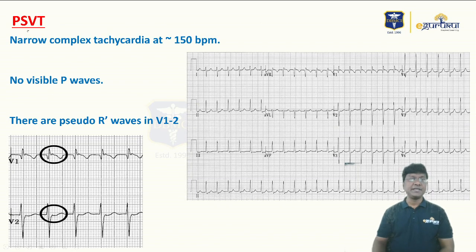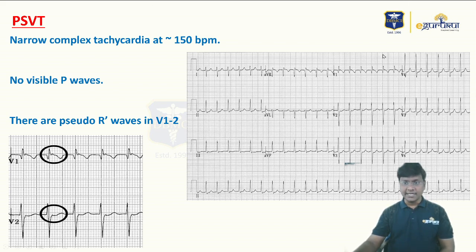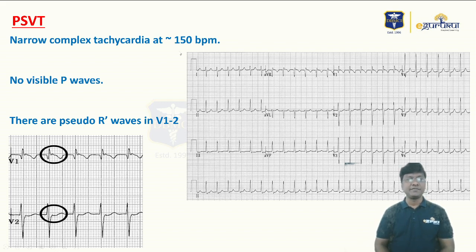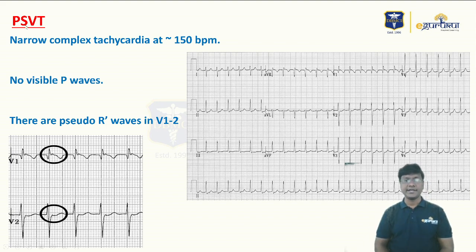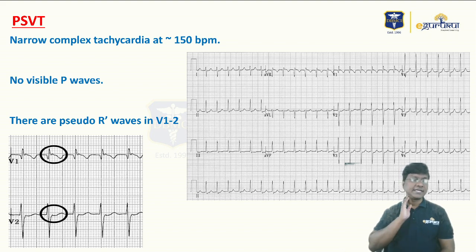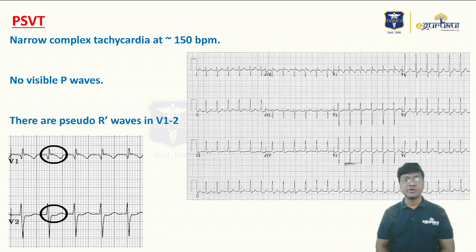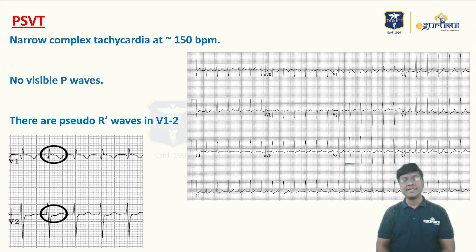PSVT — paroxysmal supraventricular tachycardia — is a narrow complex tachycardia. The QRS complexes are narrow, less than 70 milliseconds, with tachycardia around 150 beats per minute in this ECG. There is also a pseudo R wave in PSVT. The initial treatment is vagal maneuver — carotid sinus massage — but first auscultate for any bruit; if present, do not perform it. The first-line drug is adenosine 6 mg IV bolus.